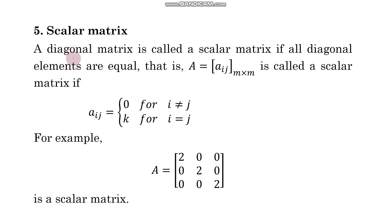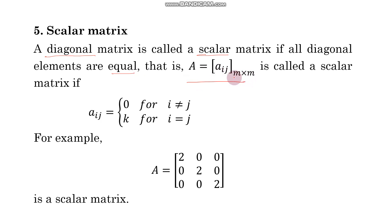A scalar matrix is a diagonal matrix in which all diagonal elements are equal. So a_ij = 0 when i ≠ j, and a_ij = k (a constant) when i = j, meaning all diagonal elements are the same value k. For example, here k = 2, so this is an example of a scalar matrix.